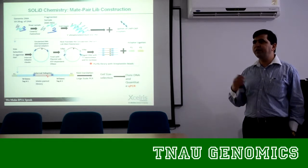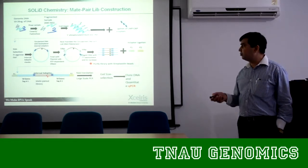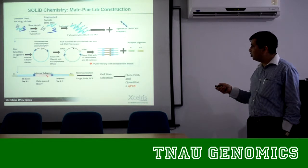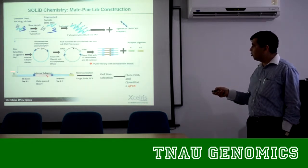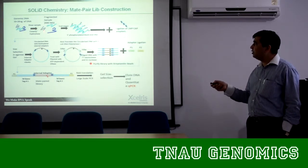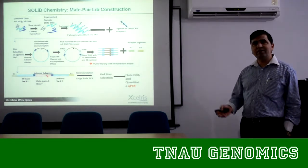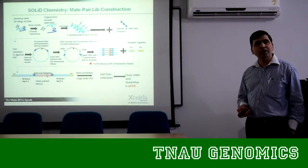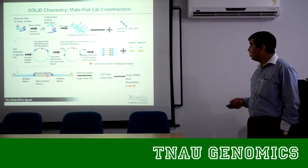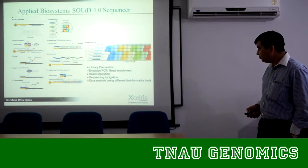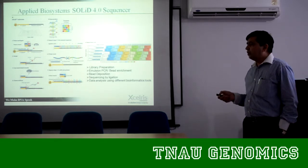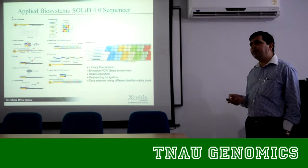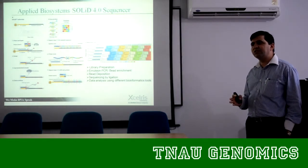Once you digest your DNA, you have 50 bases on this side and 50 bases on this side. Once you add your adaptor and sequence both ends, you know that these two tags are separated from each other by 1 KB because you created a 1 KB library. If you created a 2 KB library, these two tags will be separated by 2 KB. I will show you how this looks in the assembly. Here also we generate beads containing the DNA by emPCR in a similar fashion.